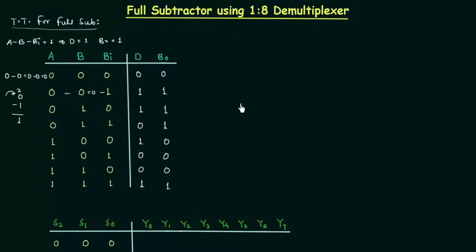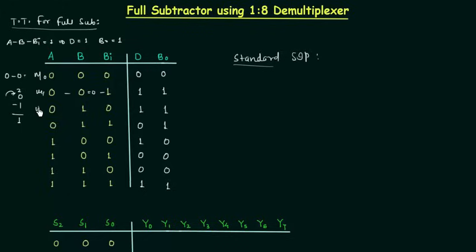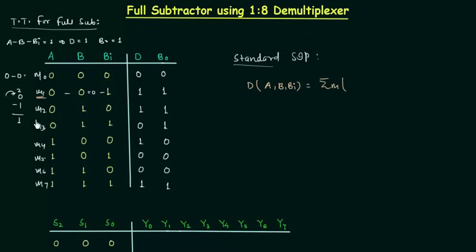Now we can easily find out the standard SOP form, which is standard because we are writing it directly from the truth table. Writing the minterms m0 through m7, for the difference output with variables a, b, bi: difference is high for m1, m2, m4, and m7. So the expression is the summation of minterms: 1, 2, 4, 7.